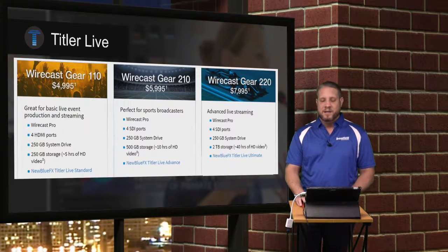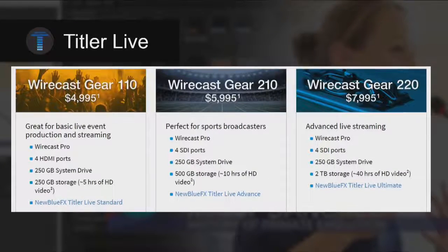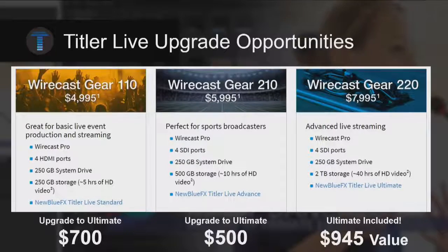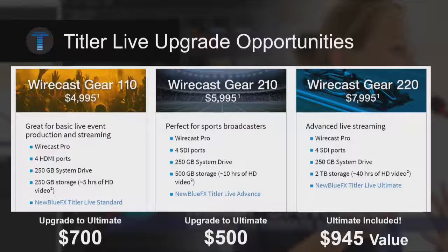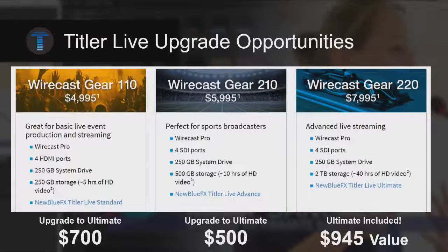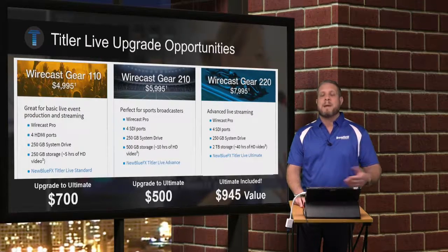All three Wirecast Gear packages may also be upgraded to Titler Live Ultimate. If you start with the Gear 110, that upgrade is $700 MSRP. If you start with the Gear 210, the upgrade is $500. The $945 Titler Live Ultimate package is already included in the Gear 220. If you have any questions about these Titler Live options, the Wirecast Gear, or Wirecast software, feel free to reach out to Rich, Dan, John, or Angel — your Broadfield salesperson — who can help identify the right version of Titler Live to bundle for your customers.